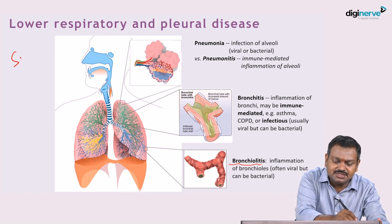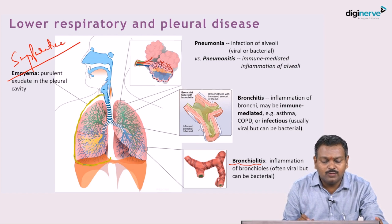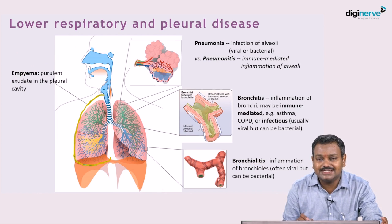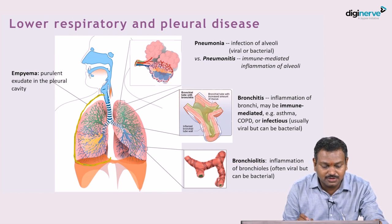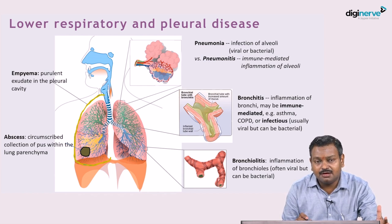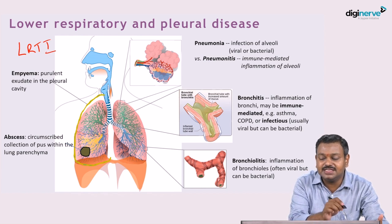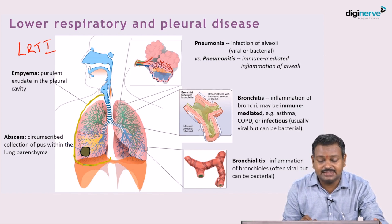Beyond these, there are suppurative lung diseases with significant pus formation. Empyema is pus in the pleural space, while lung abscess is a circumscribed collection of pus within the lung parenchyma. These constitute the entire spectrum of lower respiratory tract infections (LRTI).